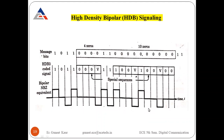High Density Bipolar (HDB) signaling addresses a problem in bipolar NRZ or AMI signals where the transmitted signal is zero when a binary zero is transmitted. This is also true for unipolar RZ and unipolar NRZ. The absence of signal sometimes causes synchronization problems at the receiver when long sequences of binary zeros are transmitted. This problem can be solved by adding a special sequence when long strings of zeros exceeding a number N are being transmitted.